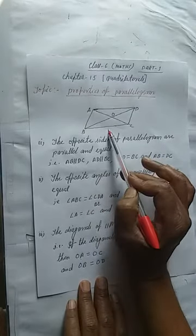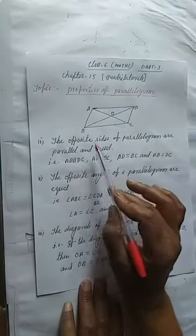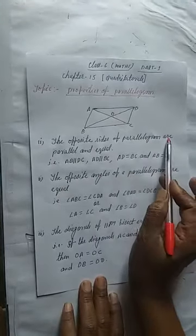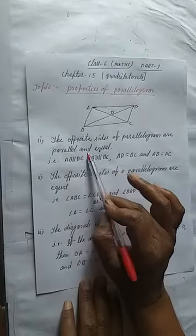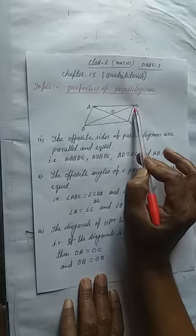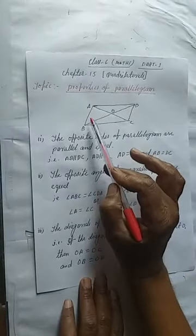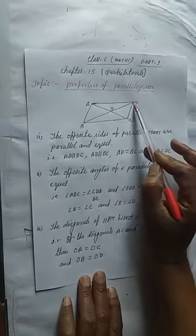So what are the properties? We have to keep it in mind. First property: the opposite sides of a parallelogram are parallel and equal. So can you say student, what is the opposite sides of AD? Your answer will be BC. What is the opposite sides of AB? Your answer will be CD.